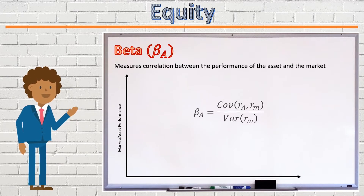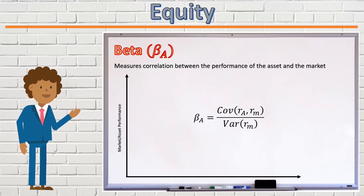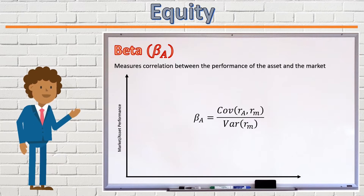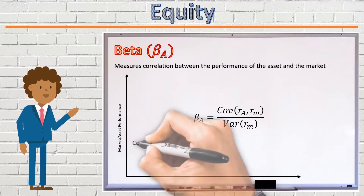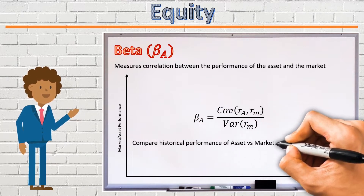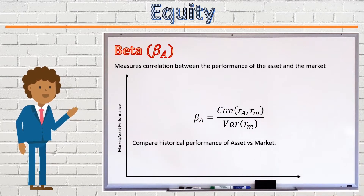The beta coefficient is given by measuring the covariance between the return on the asset and the return on the market, and dividing that by the variance of the returns on the market. It's calculated by measuring the historical returns made on the asset in question, and comparing these returns with historical returns seen on the market.